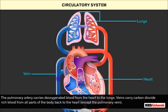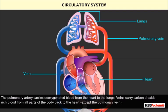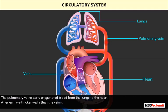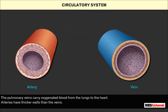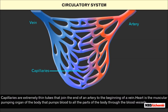Veins carry carbon dioxide-rich blood from all parts of the body back to the heart, except the pulmonary vein. The pulmonary veins carry oxygenated blood from the lungs to the heart. Arteries have thicker walls than veins. Capillaries are extremely thin tubes that join the end of an artery to the beginning of a vein.